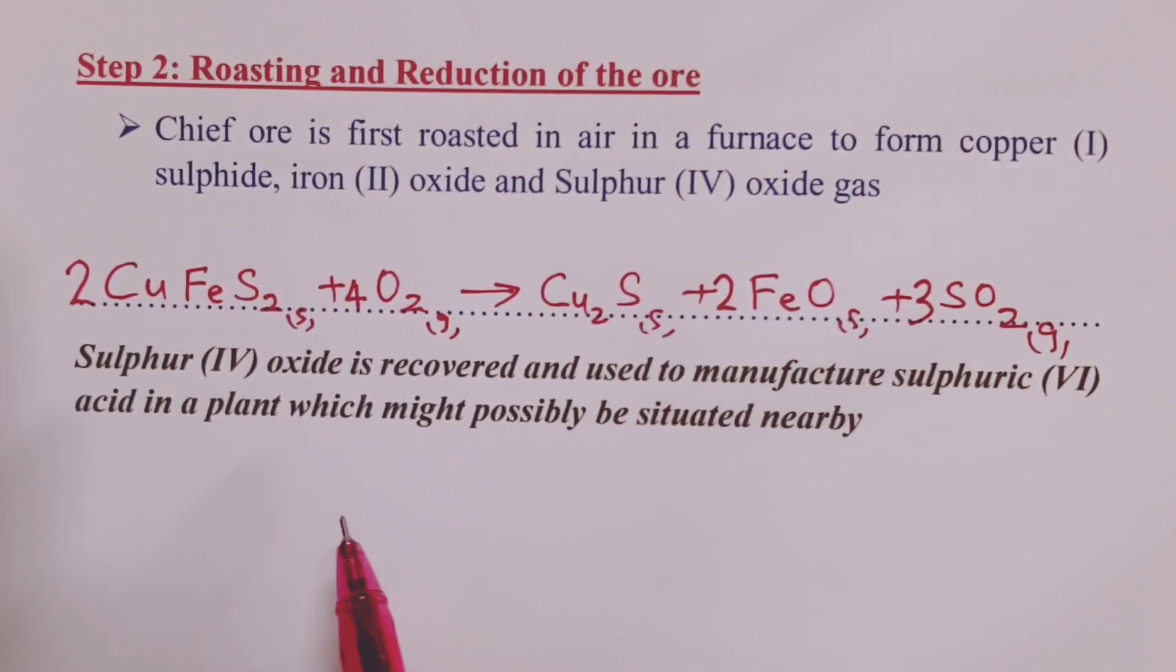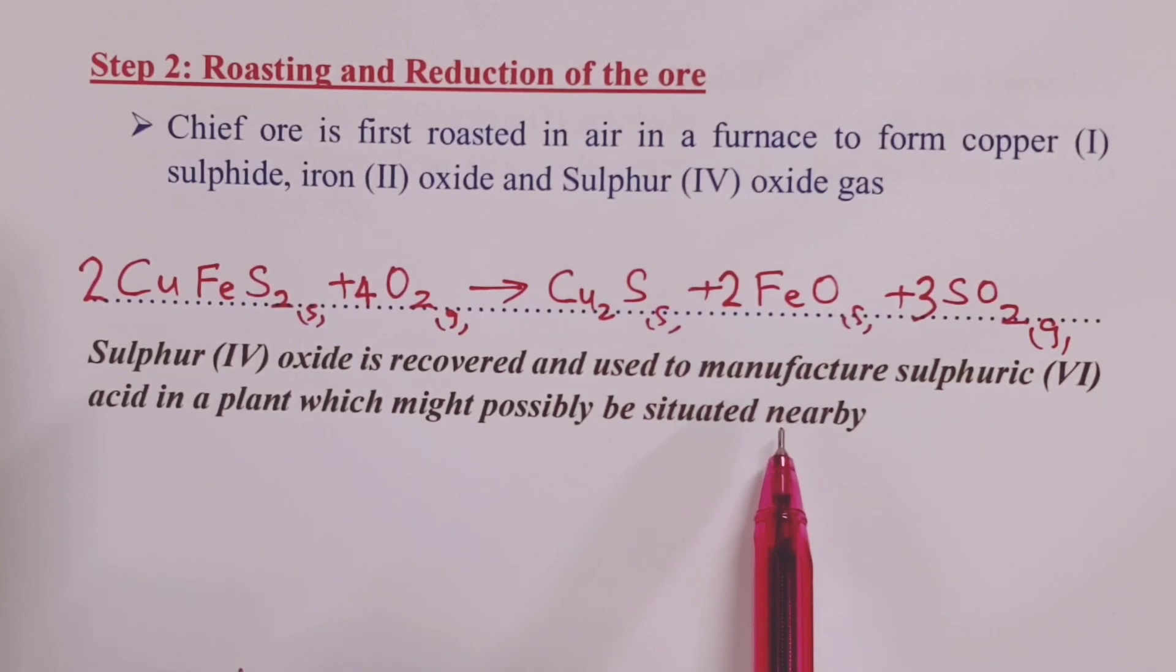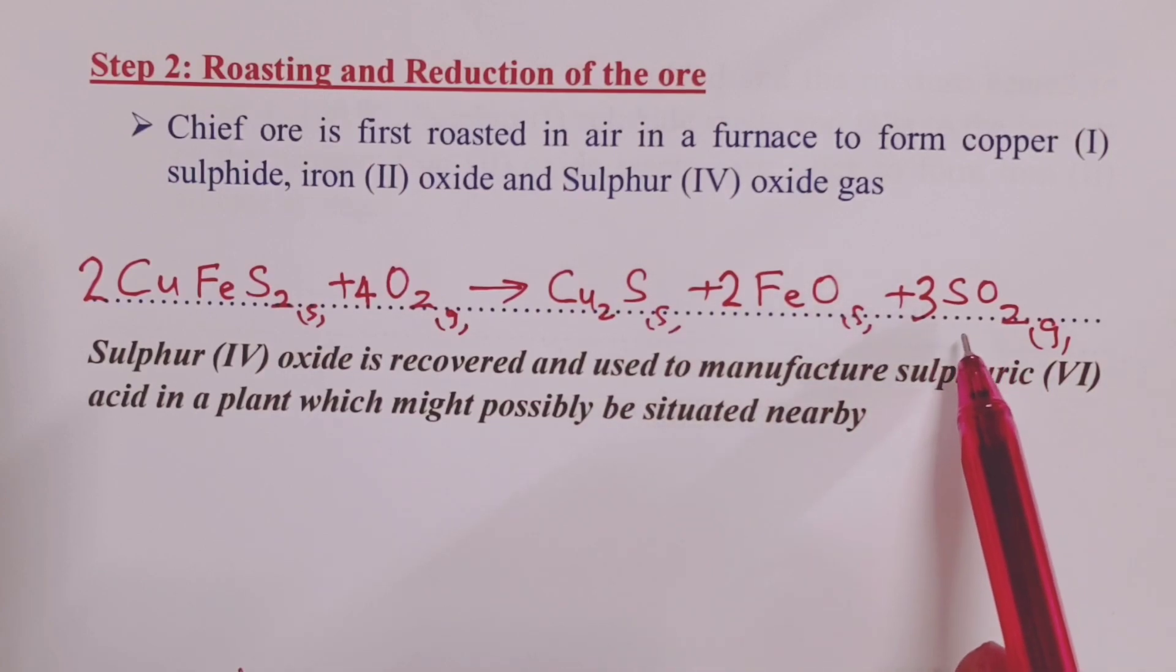Some questions usually ask about associated industries that can be found near where copper is being mined. And this is where our gas comes in. The sulfur-4-oxide here is not allowed to escape to the atmosphere, but we recover it and we can use it in the contact process manufacturing plant to produce sulfuric-6-acid.